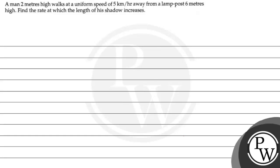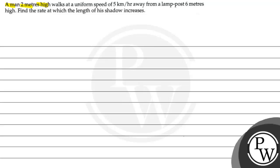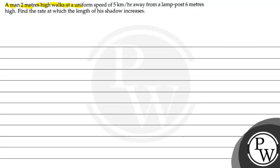Hello, let's first read the question. The question says that a man 2 meters high walks at a uniform speed of 5 meters per hour away from a lamp post 6 meters high. Find the rate at which the length of his shadow increases.